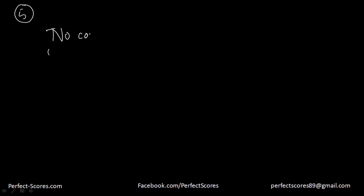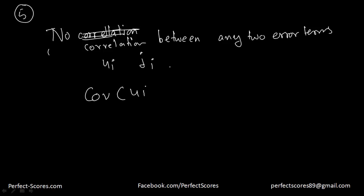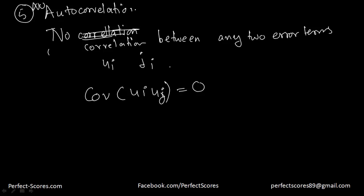The fifth assumption is that there is no correlation between two error terms — no autocorrelation. The assumption states that the covariance of ui and uj is equal to zero, where i and j represent different observations. So this is the assumption of no autocorrelation between the error terms.